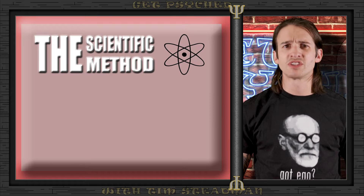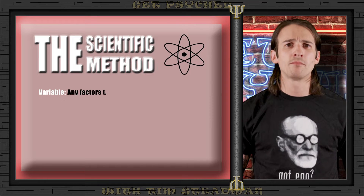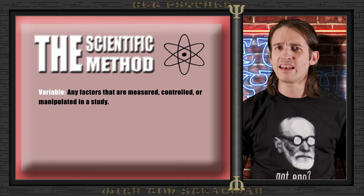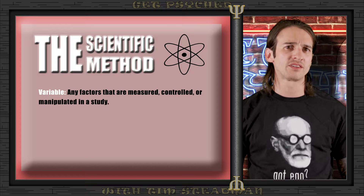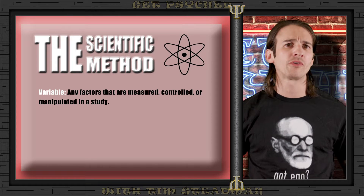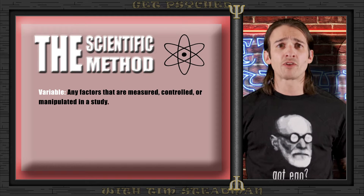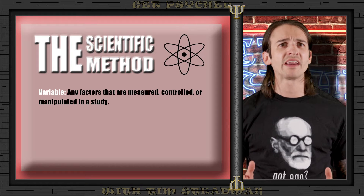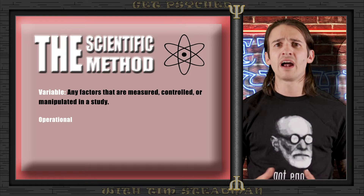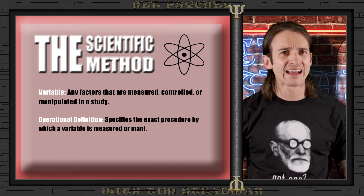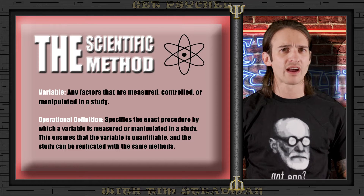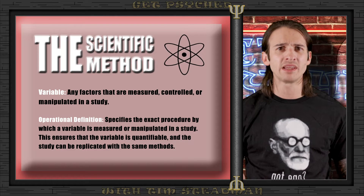Once we are happy with our hypothesis and can ensure it's falsifiable, we move on to defining our variables. Variables are elements that are measured, controlled, or manipulated in a study. In psychology, variables can include a wide range of concepts such as stress levels, memory recall, and reaction times. After identifying our variables, we define and measure them using an operational definition — which specifies exactly how a variable is measured or manipulated within a study and translates abstract concepts into measurable, empirically testable factors.